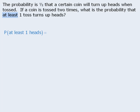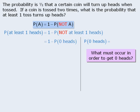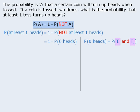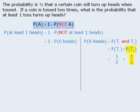Since the question involves 'at least,' we might consider applying the complement formula to rewrite the probability. Not getting at least one heads is the same as getting zero heads. For this to happen, we need to get two tails — tails on the first flip and tails on the second flip. Since these two events are independent, we apply the formula for independent events. The probability of tails on each flip is one half, and one half times one half is one quarter. So the probability of getting zero heads is one quarter, and therefore the probability of getting at least one heads is three quarters.